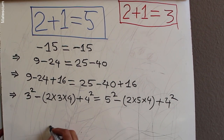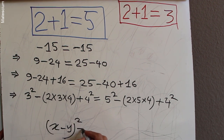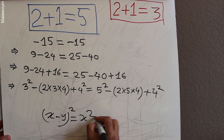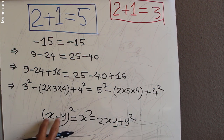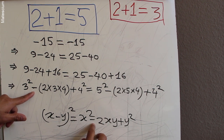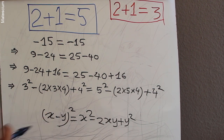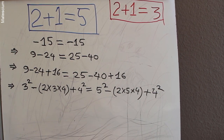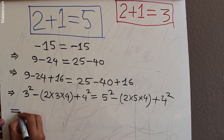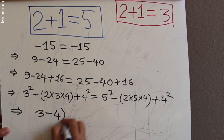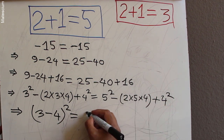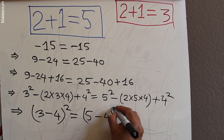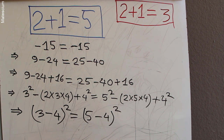At this point I apply the well-known formula: x minus y, whole squared, equals x squared minus 2xy plus y squared. Looking at the left-hand side, if x equals 3 and y equals 4, then 3 squared minus 2 times 3 times 4 plus 4 squared is exactly 3 minus 4, whole squared. Applying the same formula on the right-hand side with x equals 5 and y equals 4 gives us 5 minus 4, whole squared.